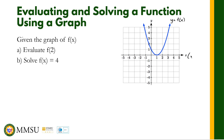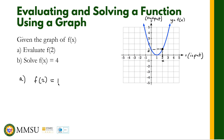Remember the input value is on the horizontal axis and the output value is on the vertical axis. When the input value is 2, we look at that point on the graph. At x equals 2, the graph is at the point where the input value is 2 and the output value is 1. This means f of 2 is equal to positive 1.